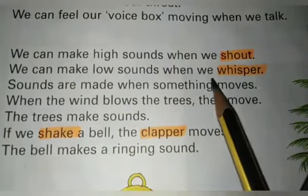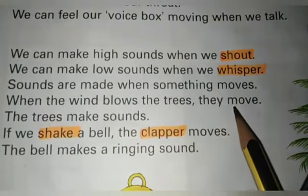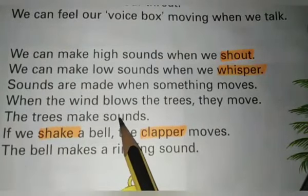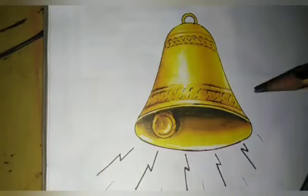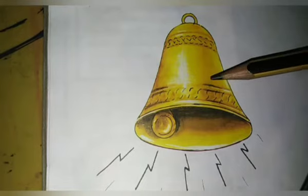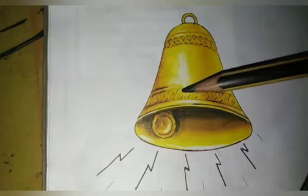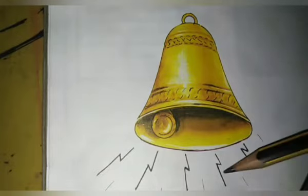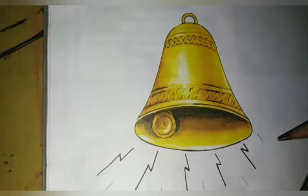Sounds are made when something moves. When the wind blows, the trees move and make sounds. This is the picture of a bell. If we shake a bell, the clapper moves — this part is called the clapper. The bell makes a ringing sound. As you can see, here are the signs of sound. The bell makes a ringing sound.